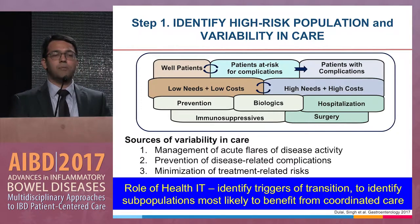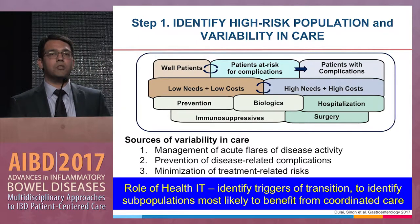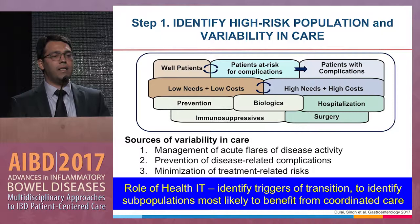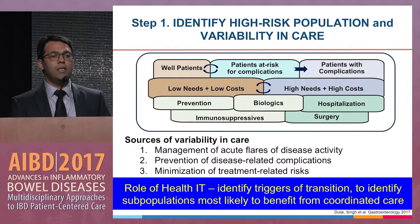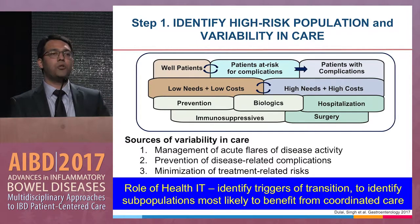The first step is to identify the high-risk patient population as well as sources of variability in care. Some patients are well — low-need, low-cost — and the focus on these patients should be prevention and doing no harm. But these patients can move in and out of different health states.